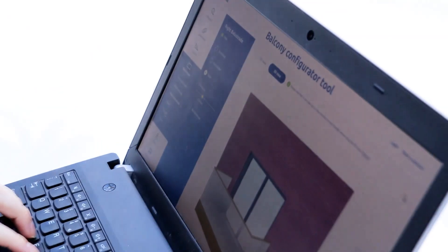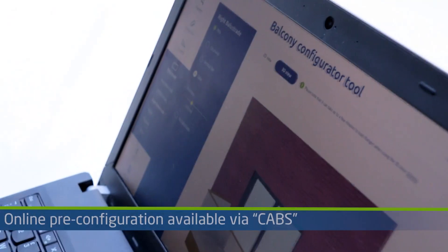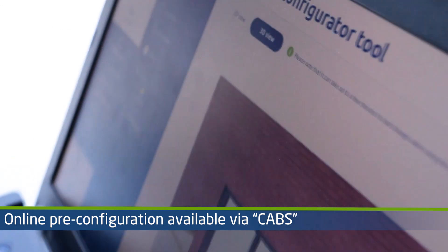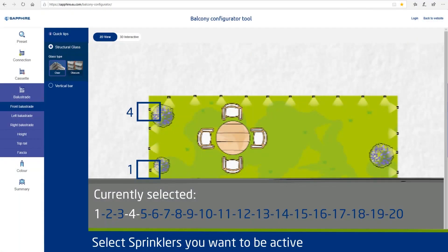The irrigation sprinkler system can be pre-designed with Sapphire's online configuration tool known as cabs, either at the point of order or can be adjusted during occupancy simply by being turned off and on again.